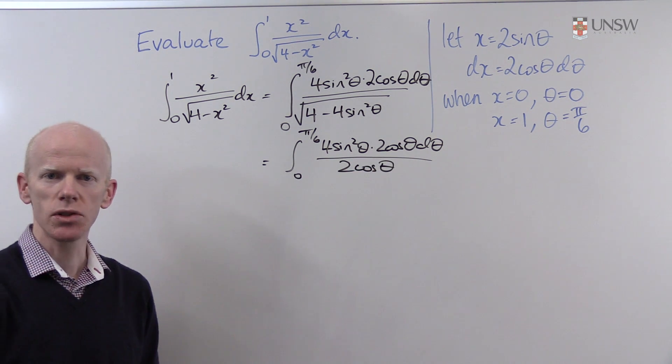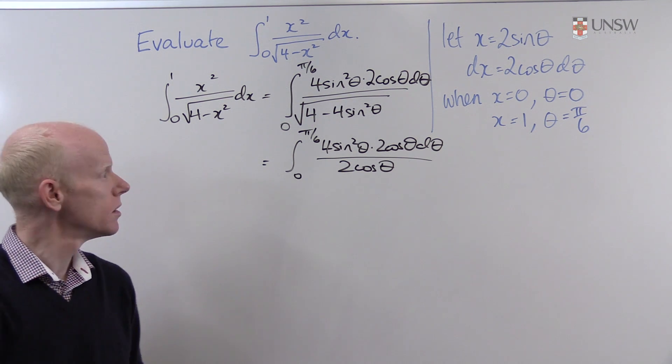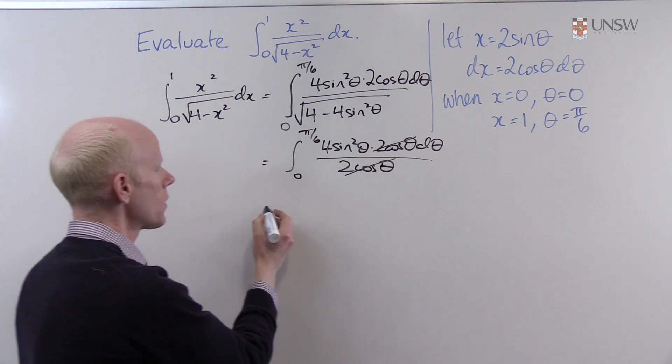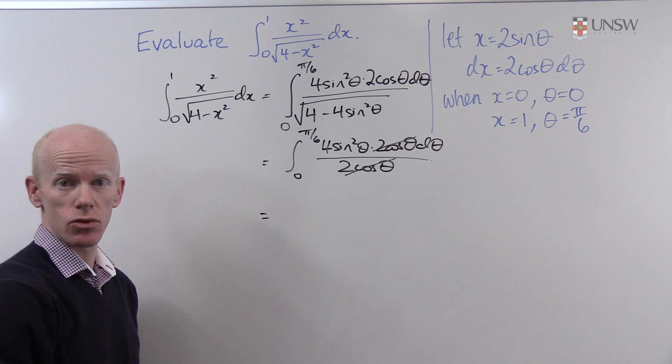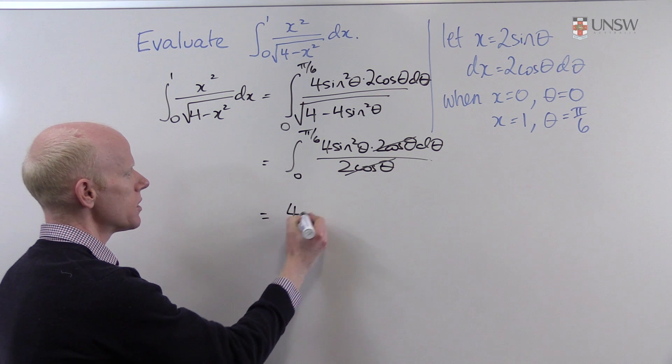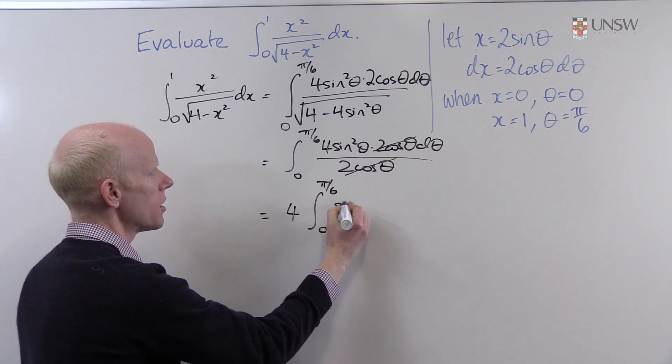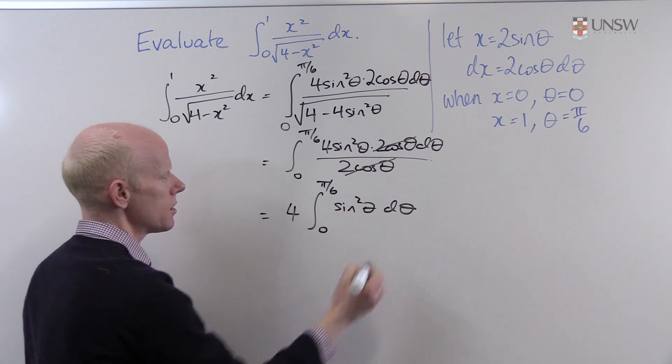And that allows us to cancel 2 cos θ from the numerator and denominator. It simplifies our integral considerably, leaving us with the integral from 0 to π/6 of sin² θ dθ.